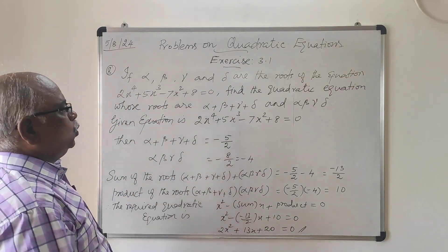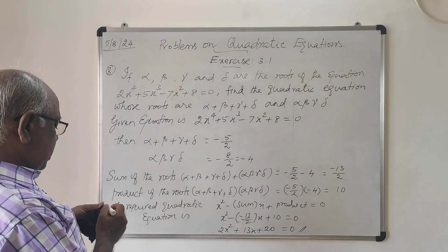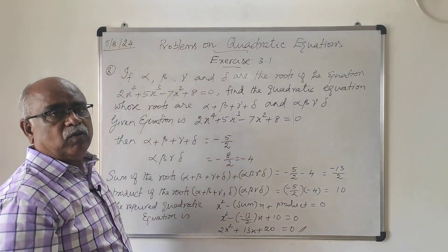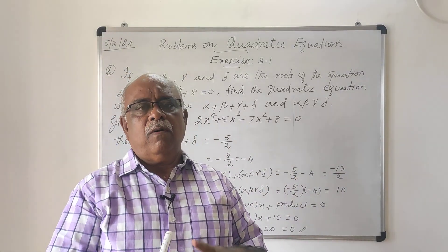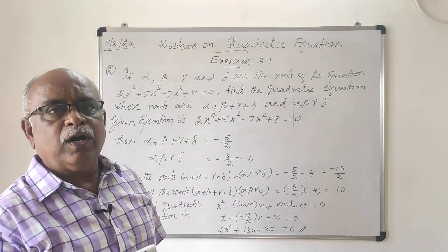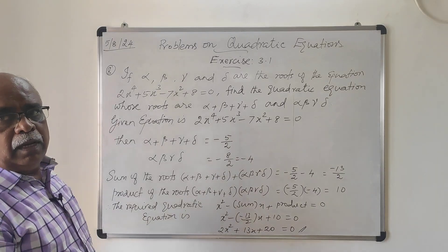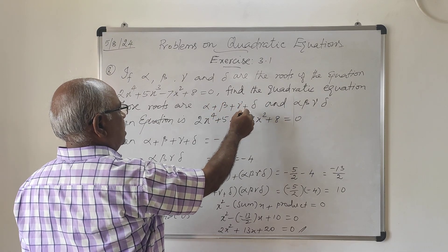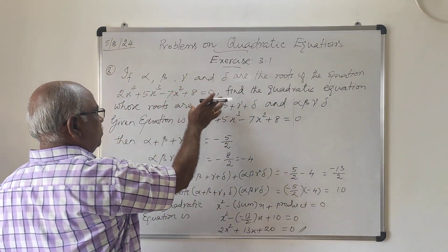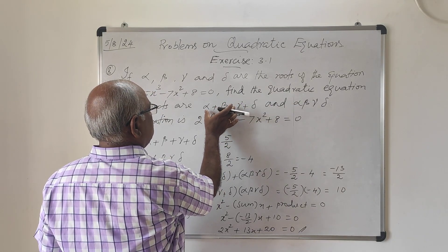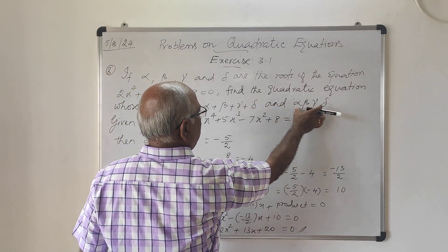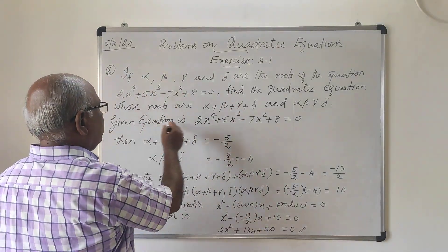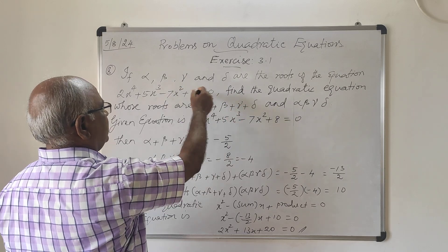If alpha, beta, gamma and delta are the roots of the quartic equation — fourth degree equation — 2x⁴ + 5x³ − 7x² + 8 = 0. Since it is a fourth degree equation, we have four roots: alpha, beta, gamma and delta. Find the quadratic equation whose roots are (α+β+γ+δ) and (αβγδ). We have to form a quadratic equation with roots (α+β+γ+δ) as one root and (αβγδ) as the other root.